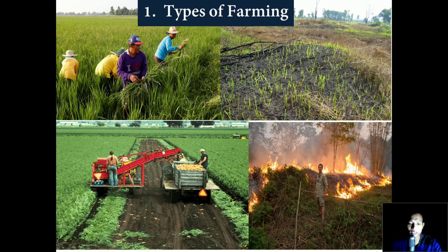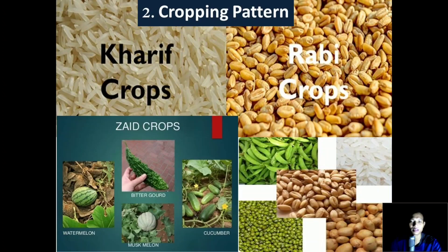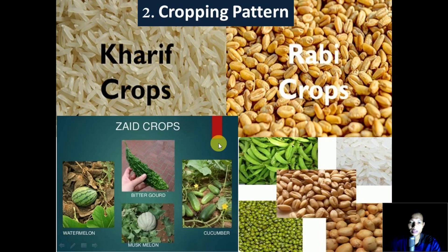Next we have cropping pattern. Here we'll learn about cropping patterns in India. Above all, we will also elaborate on the three cropping seasons of India: Kharif crops, Rabi crops, and Zaid crops.